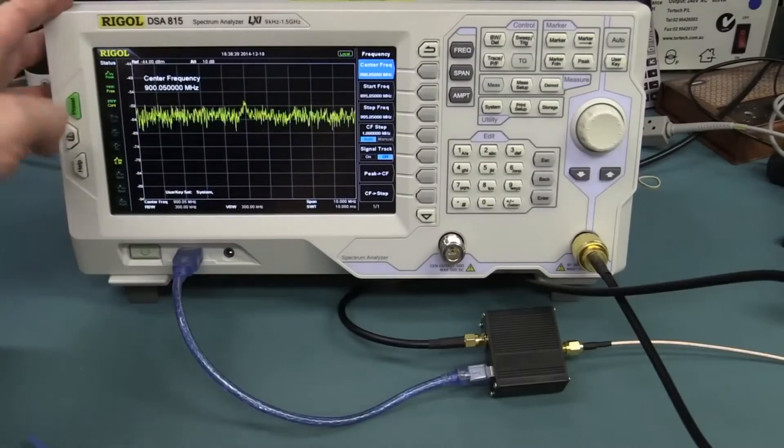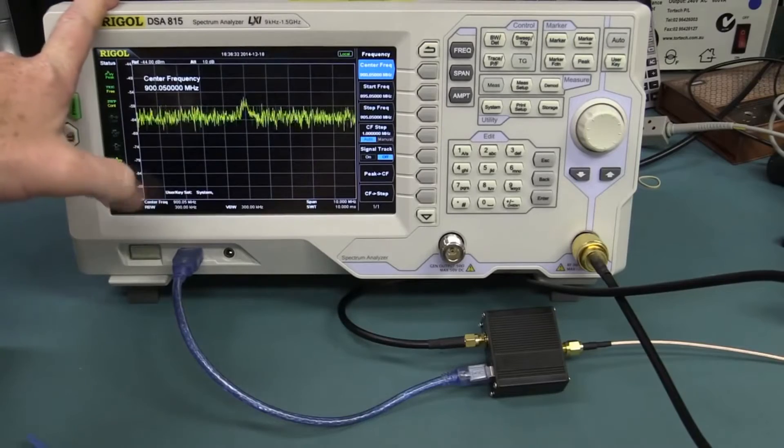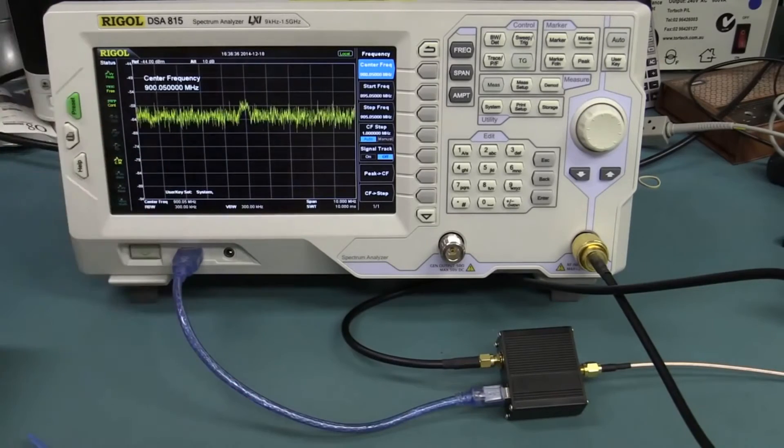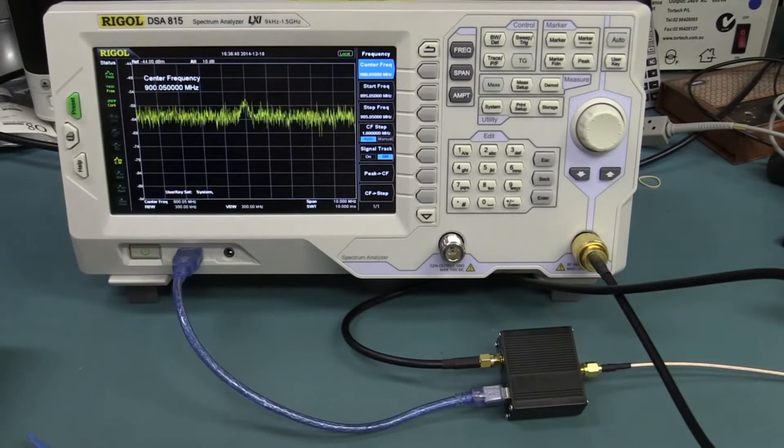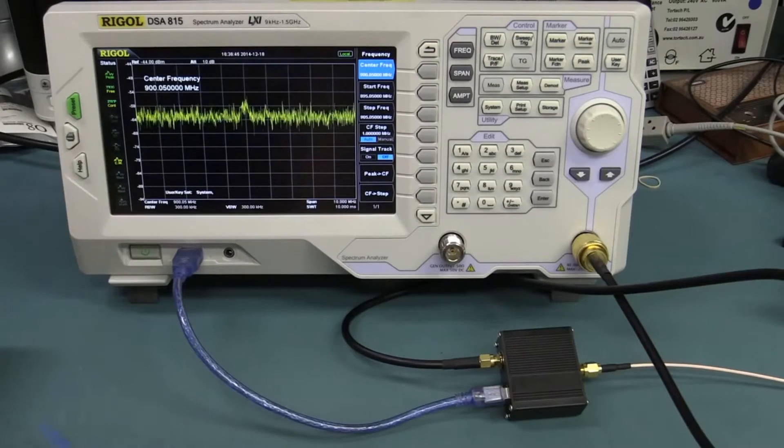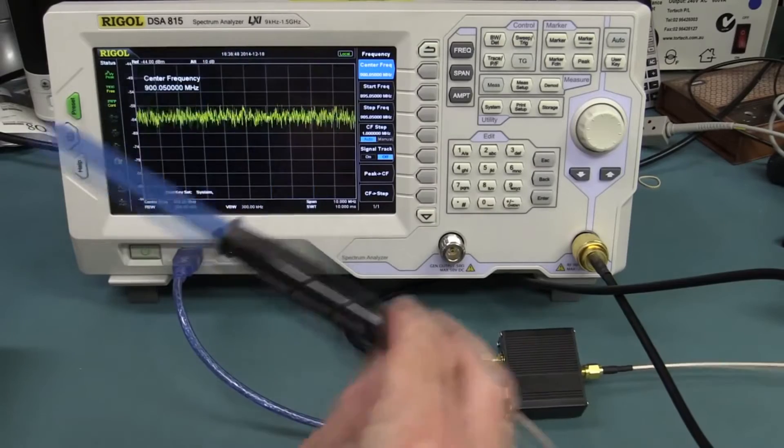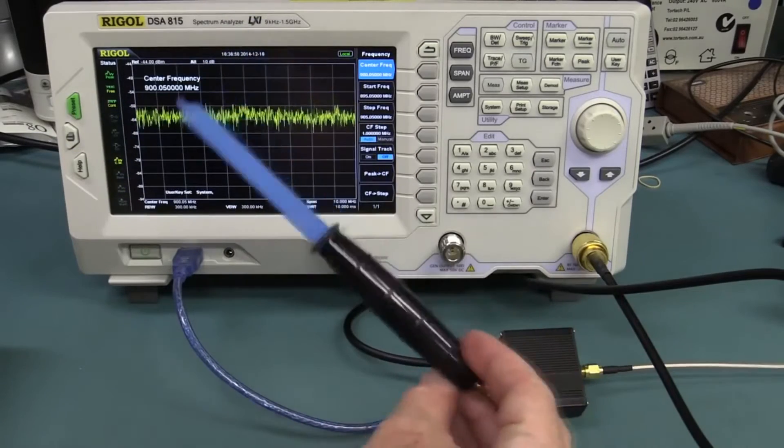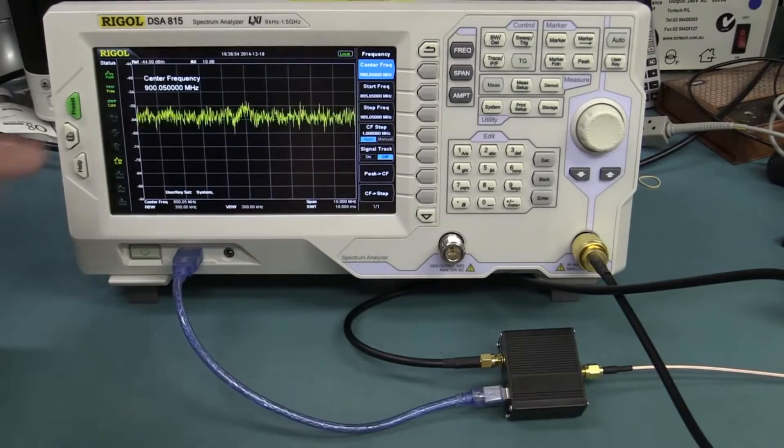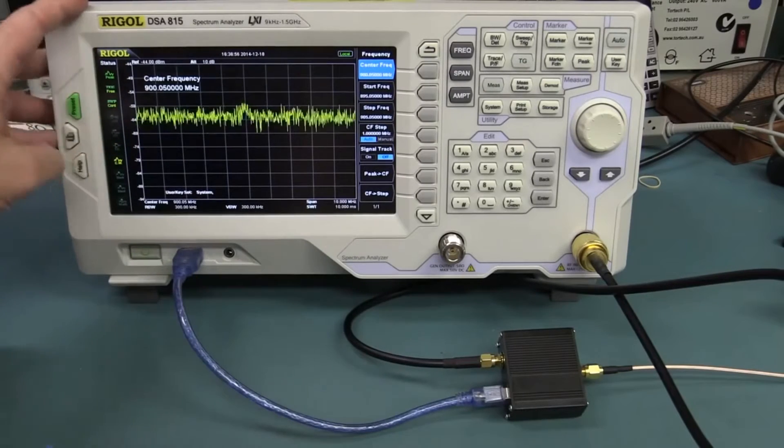So with a cheap spectrum analyzer like this Rigol DSA 815 and a near field probe kit and the LISN devices I've done a separate video on, also from TechBox, which I'll link down below for EMC pre-compliance—I already have one video on that—for under 400 bucks to get one of these near field probe sets, you can do complete EMC pre-compliance for well under two grand.